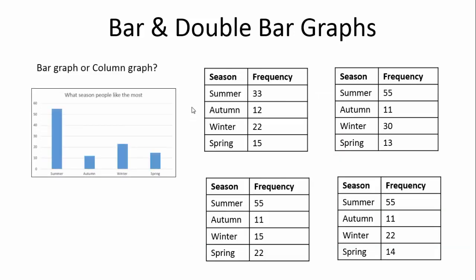I first want to talk about the difference between a bar graph and a column graph. A histogram will be covered in our histogram video. But essentially, what you're looking at now is actually a column graph, because these are going along columns. A bar graph is on its side. However, we are going to call bar graphs any graph of columns where there are gaps between - so we're going to call that a bar graph.